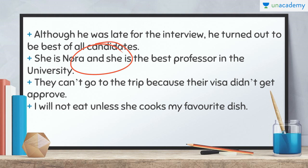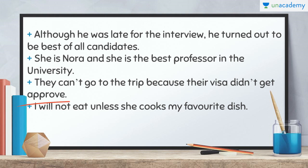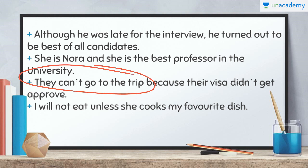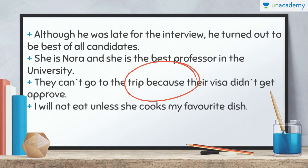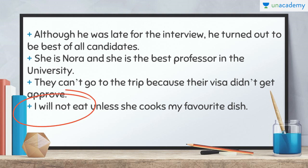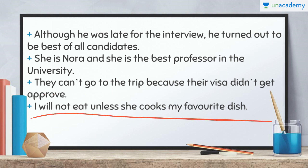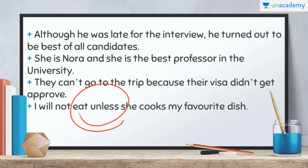Eleventh: 'They can't go on the trip because their visa didn't get approved.' Something is happening and the reason is given at the end — whenever the reason is there in the second statement explaining what happened in the first, we use the conjunction 'because'. Twelfth: 'I will not eat unless she cooks my favorite dish.' Again, we are talking about a condition — I will not eat, and the condition for stopping is that she cooks my favorite dish. So 'unless' is used, meaning 'till the time she cooks my favorite dish'.